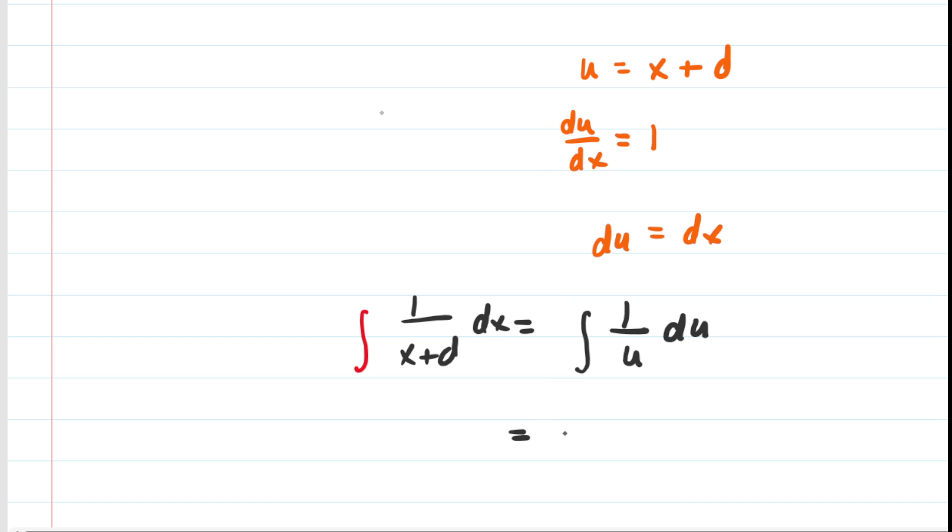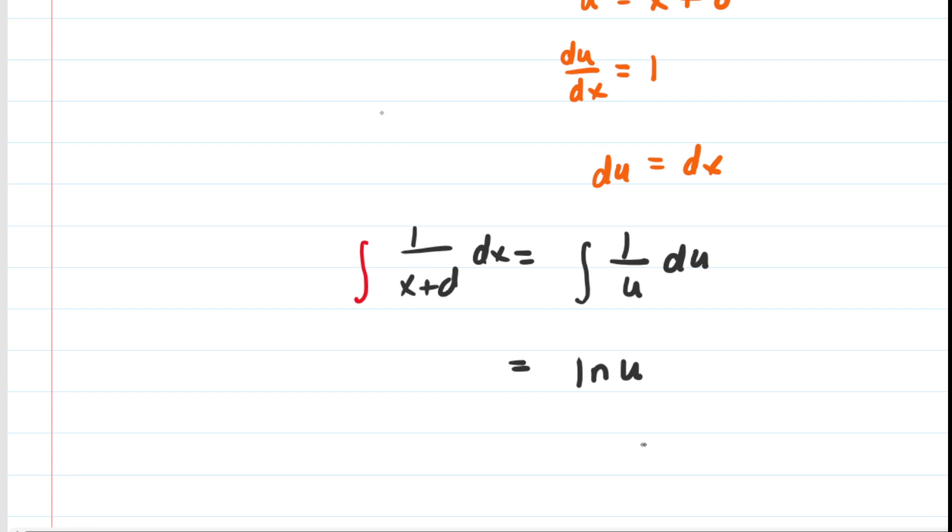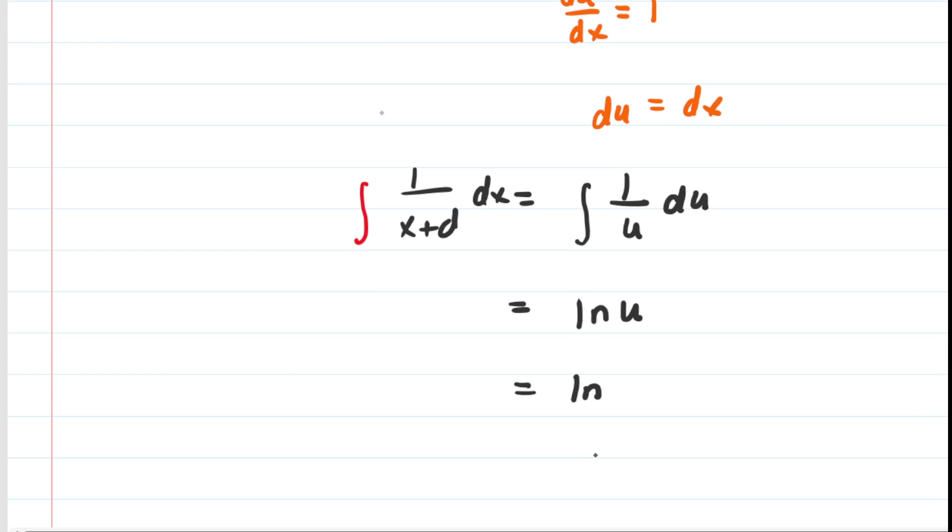Now, you know this integral. This is 1 over u. And when you integrate 1 over u, you basically get the natural log of u. It's actually the absolute value of u. But our values of x and d are both positive. So we're just going to say u. There's no need to say the absolute value. And then we put back our u. Our u, if you look at the tippy top of the screen, was x plus d. So we do get the natural log of x plus d.